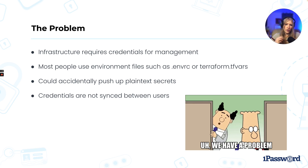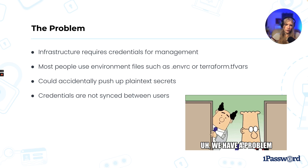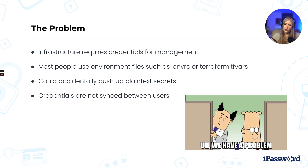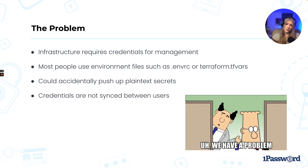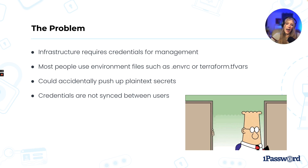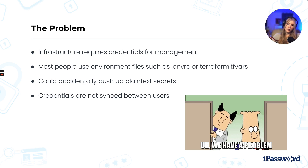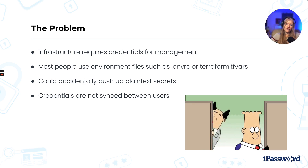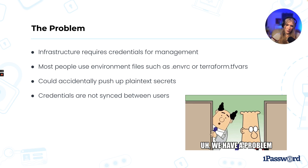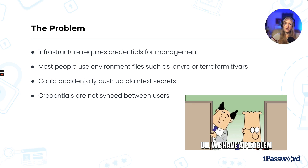Once done with your Terraform changes, you commit all files to source control. But your .gitignore was not configured to ignore your environment file filled with all these plain text secrets, and now they've been leaked to your repo.